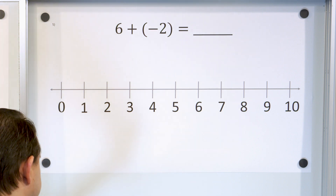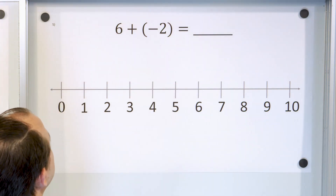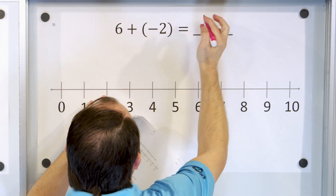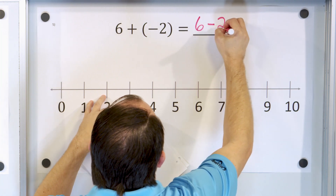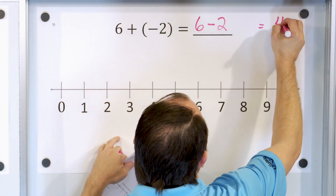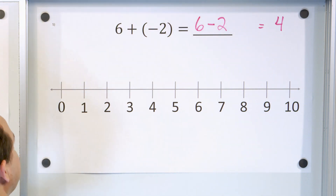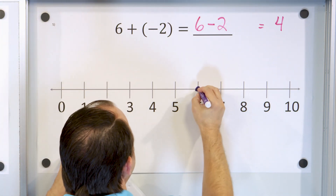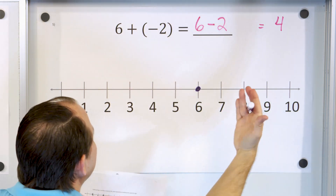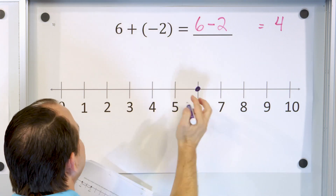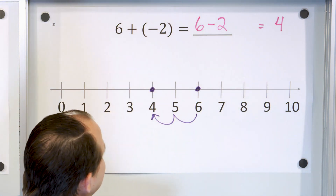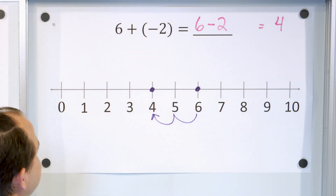Here we have six plus a negative two. How do we rewrite this in terms of subtraction? Adding the opposite sign is the same thing as just subtraction. So six plus a negative two is the same thing as six minus two, and you already know that's equal to four. On the number line, if I start with $6 and I add to it — usually I go to the right, but since I'm adding debt, I'm adding what I owe, so I must slide to the left to the number four. That's why the answer is four, and that's the same thing as six minus two sliding to the left and landing on four.